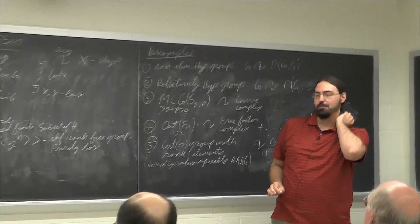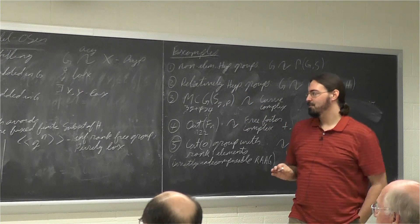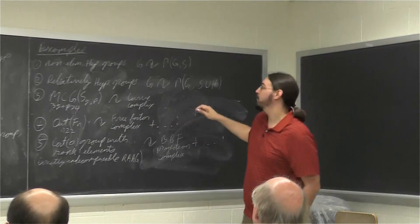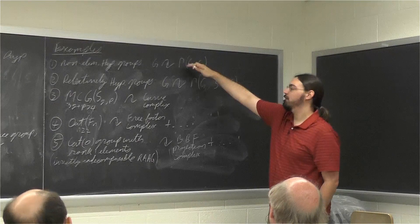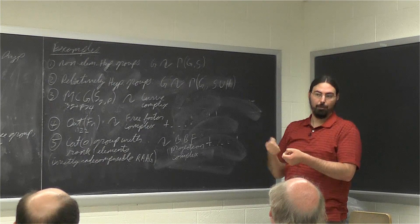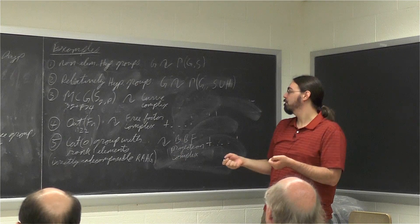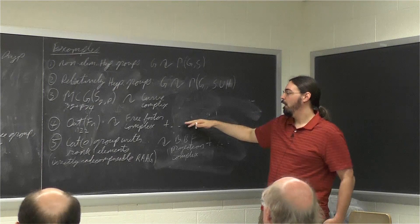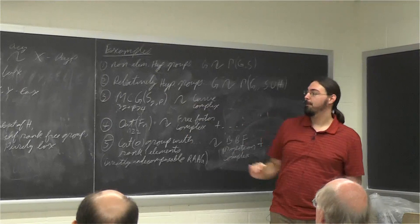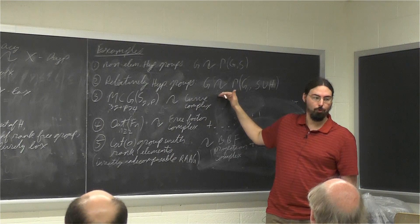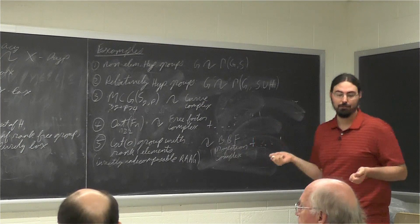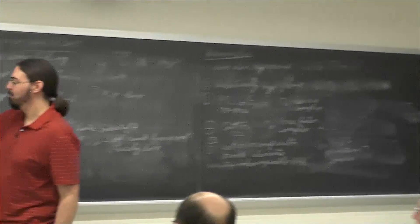I'm stating the simplest version to mention some interesting consequences. For hyperbolic groups, loxodromic elements are just all infinite order elements. For relatively hyperbolic groups, it's any infinite order element not conjugate into a parabolic subgroup. For mapping class groups, these are the pseudo-Anosov elements. For Out(F_n), these are the fully irreducible automorphisms. So in the mapping class group case you get a free normal subgroup consisting only of pseudo-Anosov elements; for Out(F_n), a free normal subgroup of only fully irreducible elements. In particular, these are not simple.